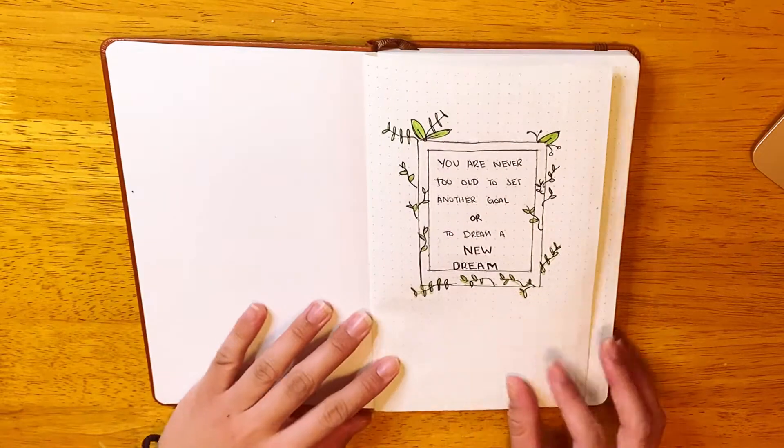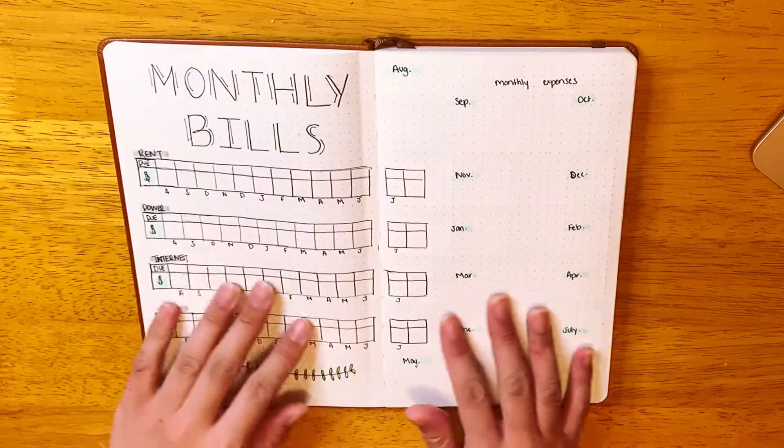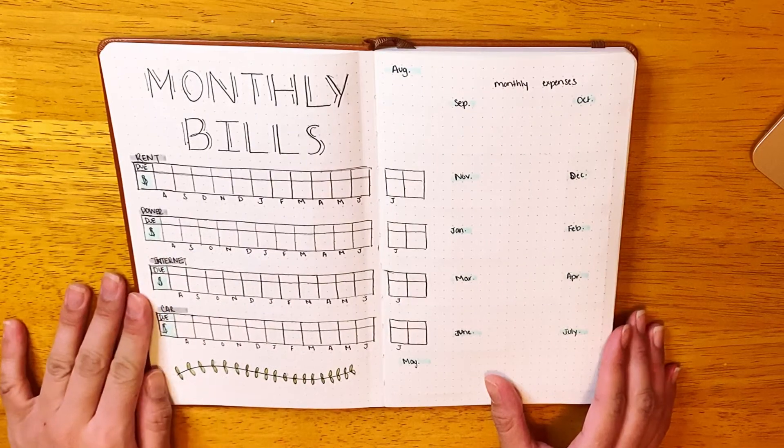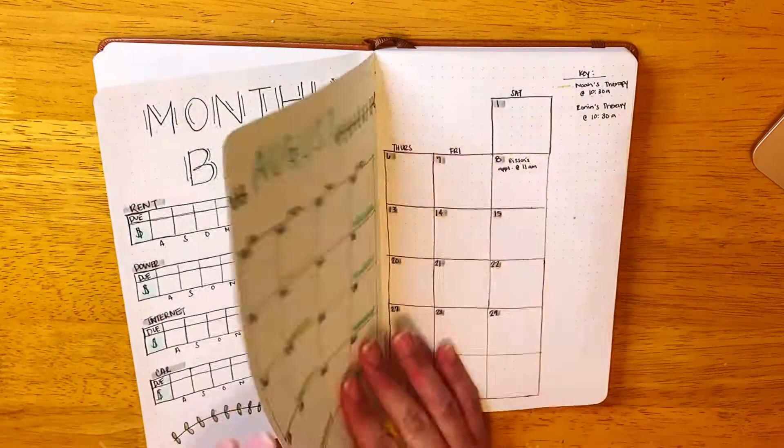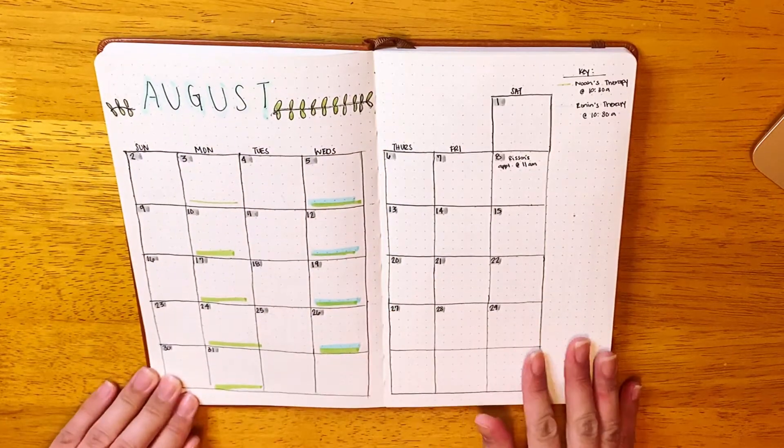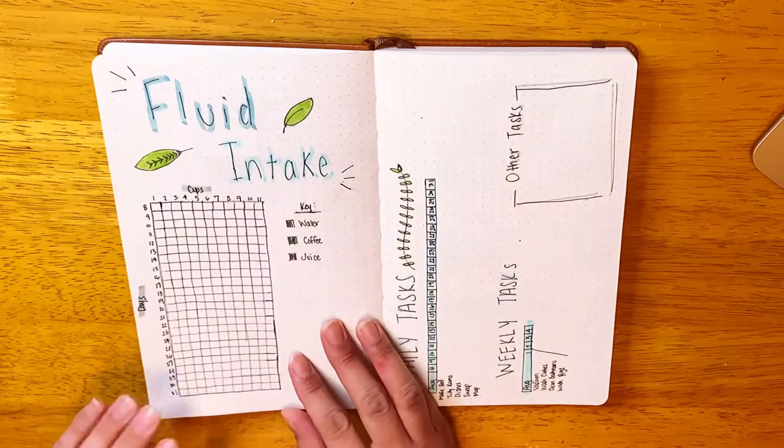Now here is a final flip through of my first ever bullet journal. I'm glad I did this because now I can see the imperfections that I've made. Then when I do this again, it'll help me decide what I want to do and what I don't want to do for the next time.